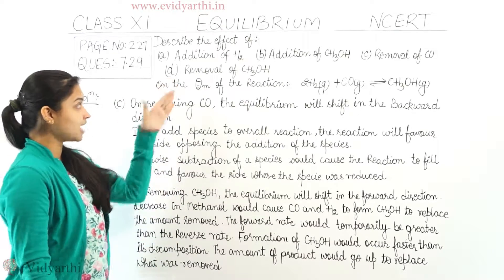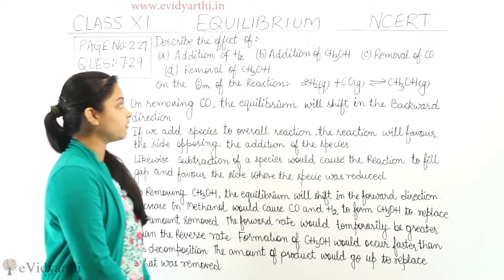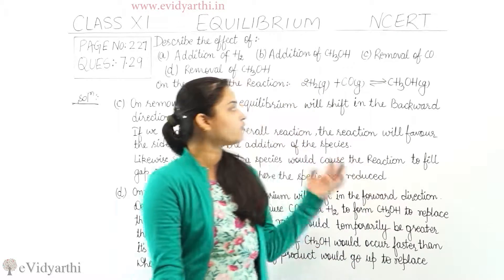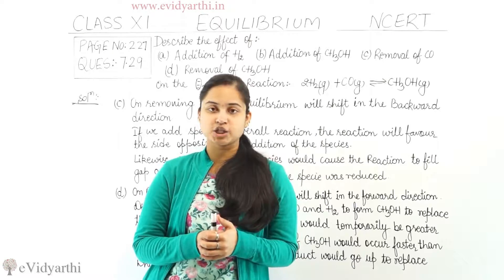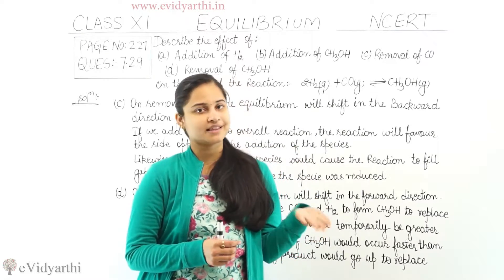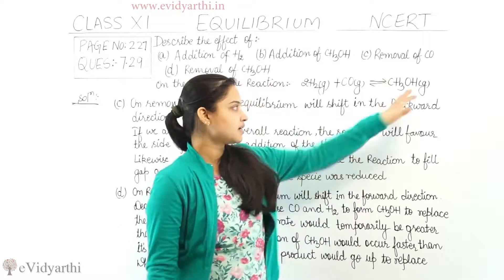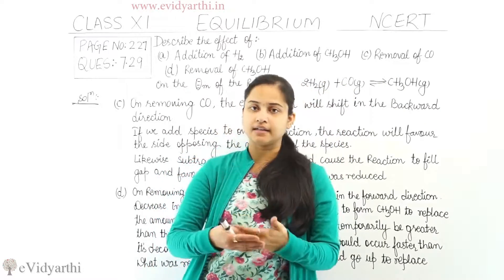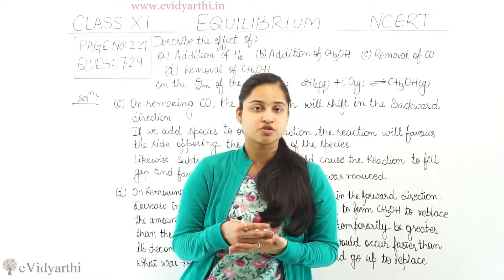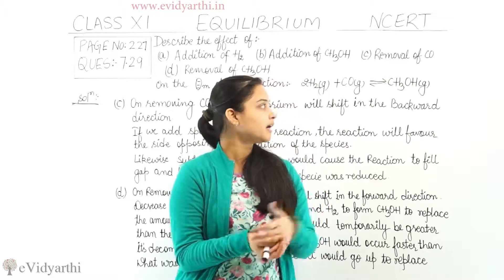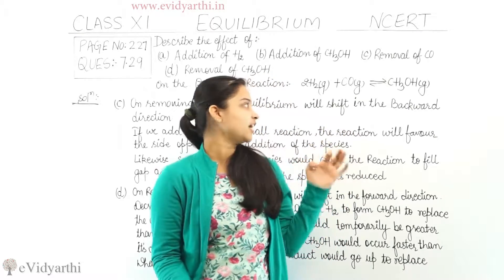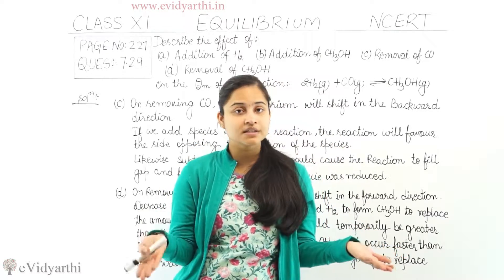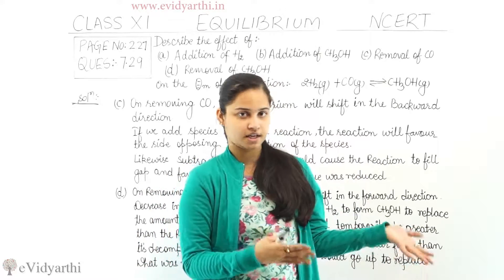Coming to the last part of the question: what will be the effect on the equilibrium when there is removal of methanol gas? When methanol is removed from this reaction, the equilibrium will shift in the forward direction. As we remove CH₃OH, the reactants H₂ and CO are still present and will produce more CH₃OH. If we remove CH₃OH from this reaction, the reactants will react with each other and form more CH₃OH, resulting in a shift of equilibrium to the forward direction.